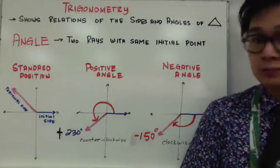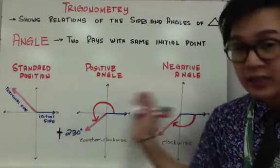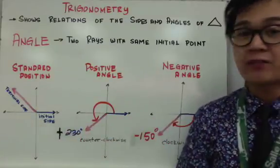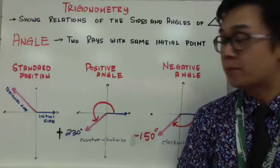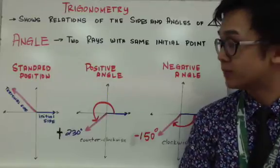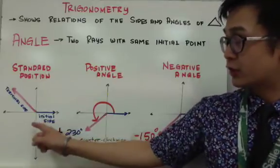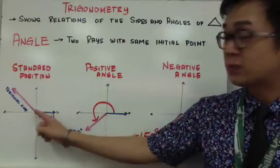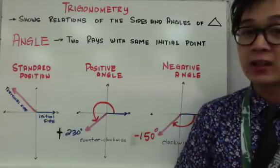An angle, by definition, is basically two rays with the same initial point. The first example on the board is an angle formed in standard position. In trigonometry, most of the angles we use will be in standard position — where the initial side is on the x-axis and the terminal side is moving around the xy-plane.